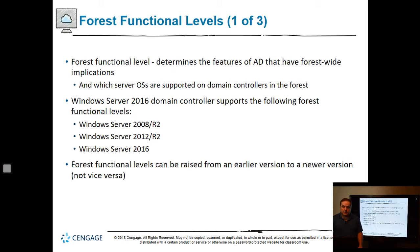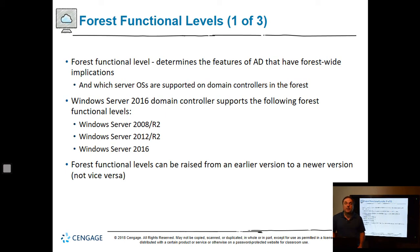Forest functional level determines the features of AD that have forest-wide implications. Windows Server 2016 domain controllers only go back to 2008 now — 2012 went back to 2003, but 2016 only goes back to 2008. Forest functional levels can be raised from an earlier version to a newer version. It says not vice versa, but there actually is a procedure using PowerShell commands to go backwards if you went too high.